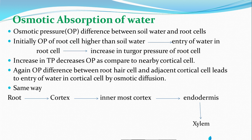This movement of water molecules creates a category of pressure known as osmotic pressure. This osmotic pressure is mainly formed due to the difference in concentration of solutions. When we think about the root cell and the soil water, there is a difference of osmotic pressure between these two.